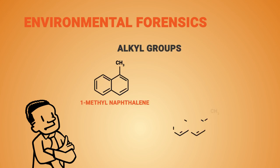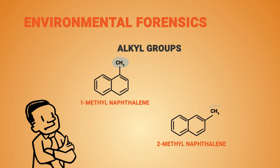PAHs can have alkyl groups, such as methyl groups, attached to the rings. The alkyl PAHs are generally not included in standard SW-8270 analyses. However, some labs are able to report groups of alkyl PAHs if requested in advance. These are known as alkyl homolog groups and can be quite useful in sleuthing out sources of PAHs. Shown here are 1-methyl naphthalene and 2-methyl naphthalene. They are unusual for alkyl PAHs in that they're included in the standard SW-8270 analyses. However, they are also part of a C1 homolog group of naphthalene because they both have one alkyl carbon attached to the PAH rings.